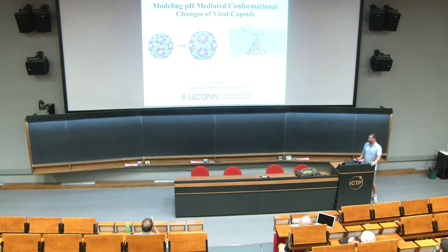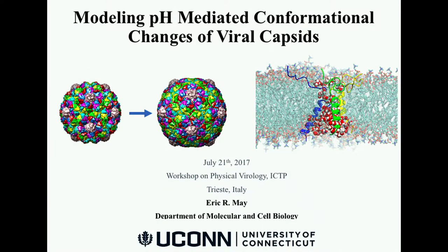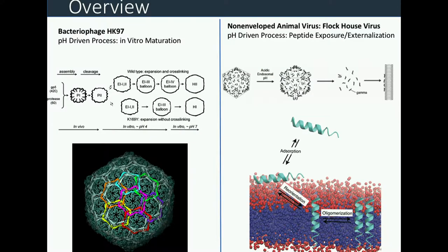I'm going to talk about results from mainly atomistic molecular dynamics simulations, with a little bit of coarse-grain molecular dynamics as well. The talk is split in two parts. The first part covers maturation transitions of a bacteriophage that can be driven by pH modulation in vitro. This is older work published a few years ago, and the second half covers more recent work.